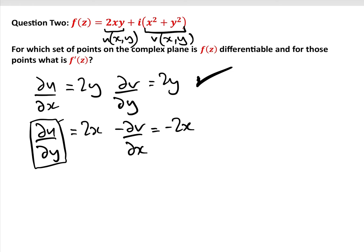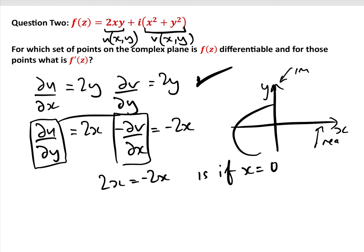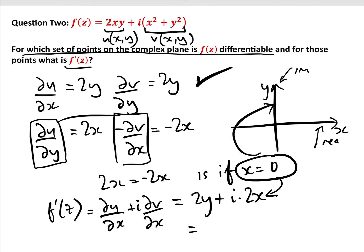Here we have a problem: for complex differentiability, ∂u/∂y must equal -∂v/∂x, meaning 2x must equal -2x. That's only true when x = 0, which on the complex plane is the imaginary axis. So f(z) is differentiable on the imaginary axis only. For those points, f'(z) = ∂u/∂x + i·∂v/∂x = 2y + i·2x. Setting x = 0 gives f'(z) = 2y.